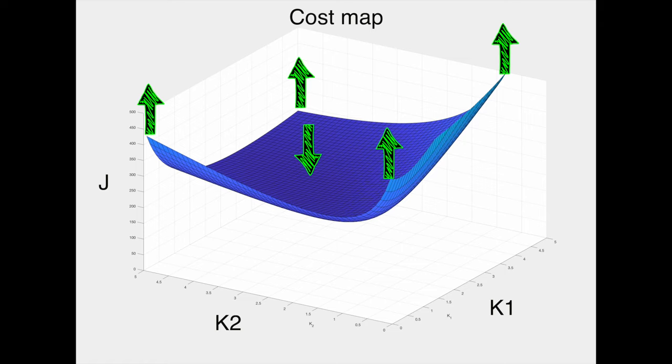And this low point is the lowest cost, which as expected is right around K1 equals 3.4 and K2 equals 2.3.